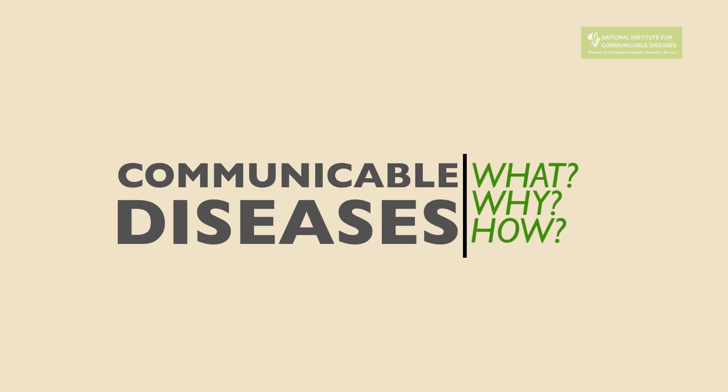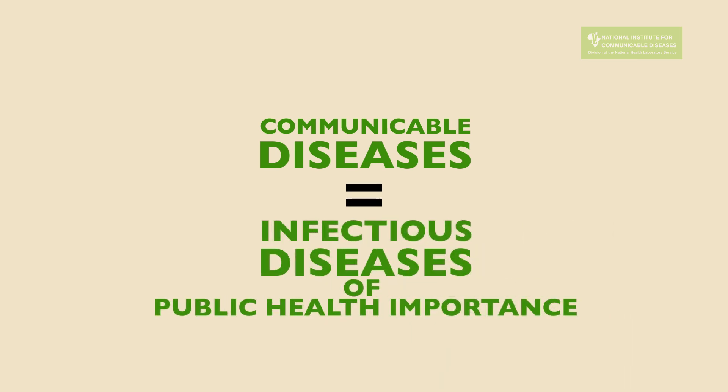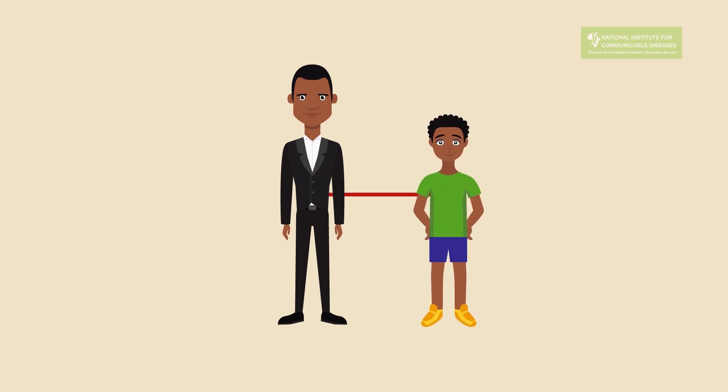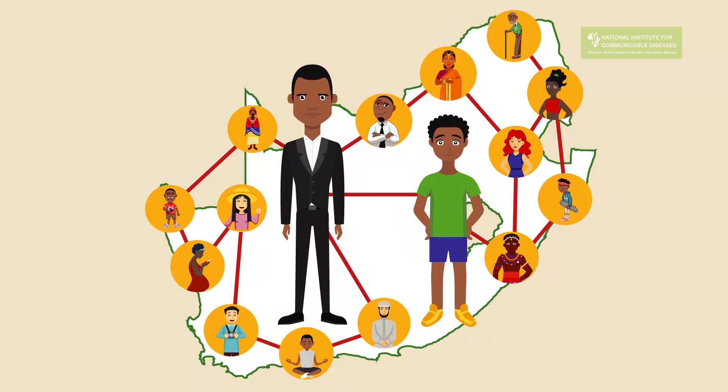We are going to take a look at what communicable diseases are, what causes them, and how they are transmitted. Communicable diseases, or most commonly known as infectious diseases, are diseases that can be spread from one person to another and can cause a large number of people to get sick.